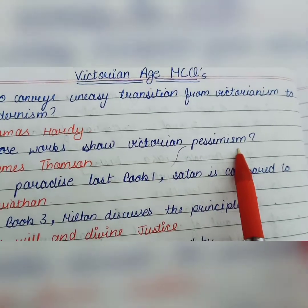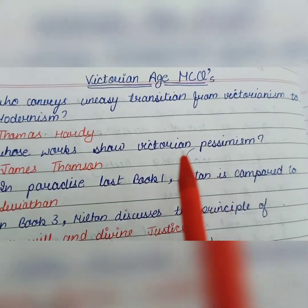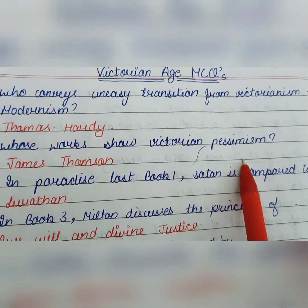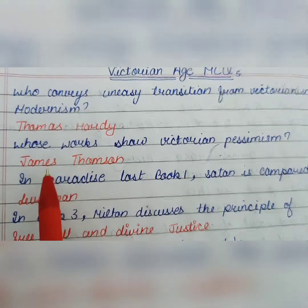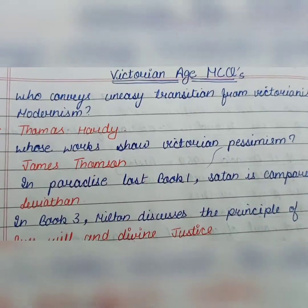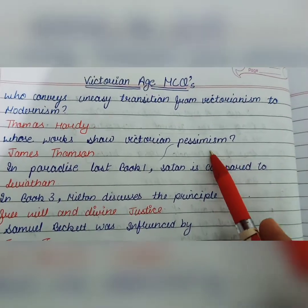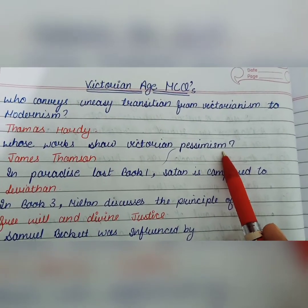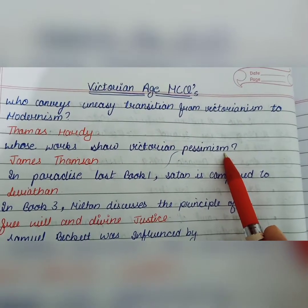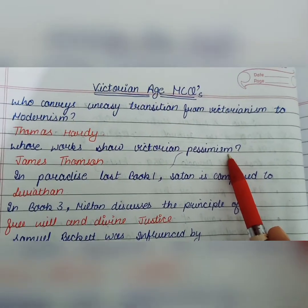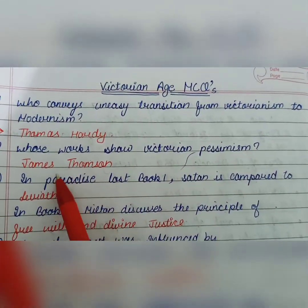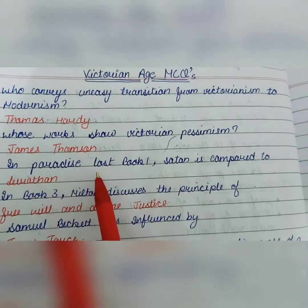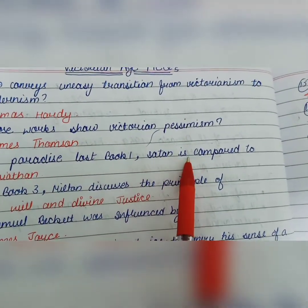Whose works show Victorian pessimism? That is James Thompson. Pessimism means when there is a belief in our mind that bad things are going to happen. So it is James Thompson's works that show Victorian pessimism.